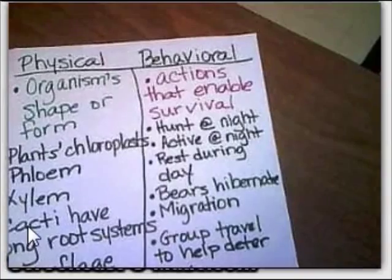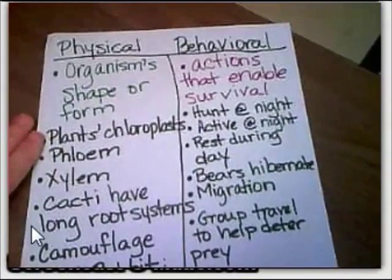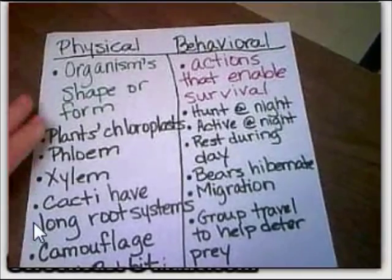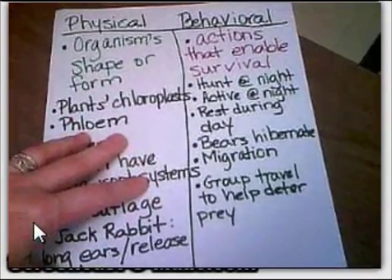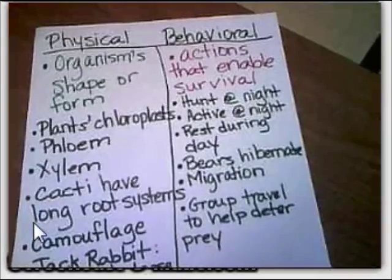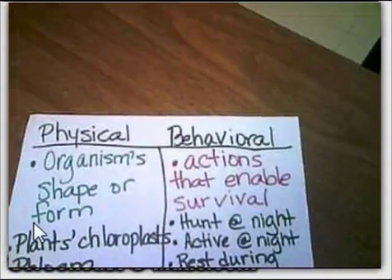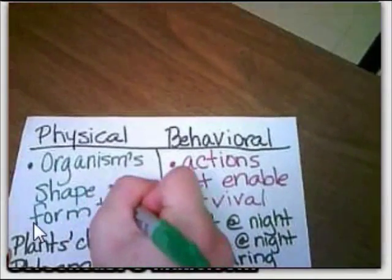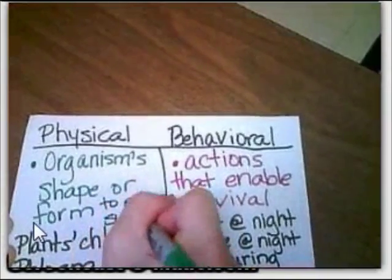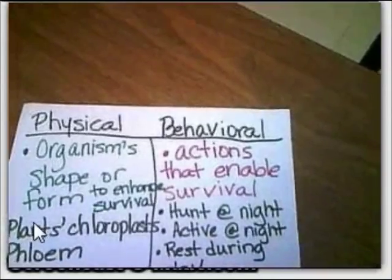Our time is coming to a close. You should have paused us as often as you needed to, go back and re-watch this, add anything we didn't have time to add, and prepare for an assessment of your learning. Remember that physical and behavioral adaptations help organisms survive their environment. An organism's shape or form enhances survival — and that is it for episode 5 of Sassy Science. I'm Miss Hames. I'm Mrs. Green. We'll see you later. Bye-bye!